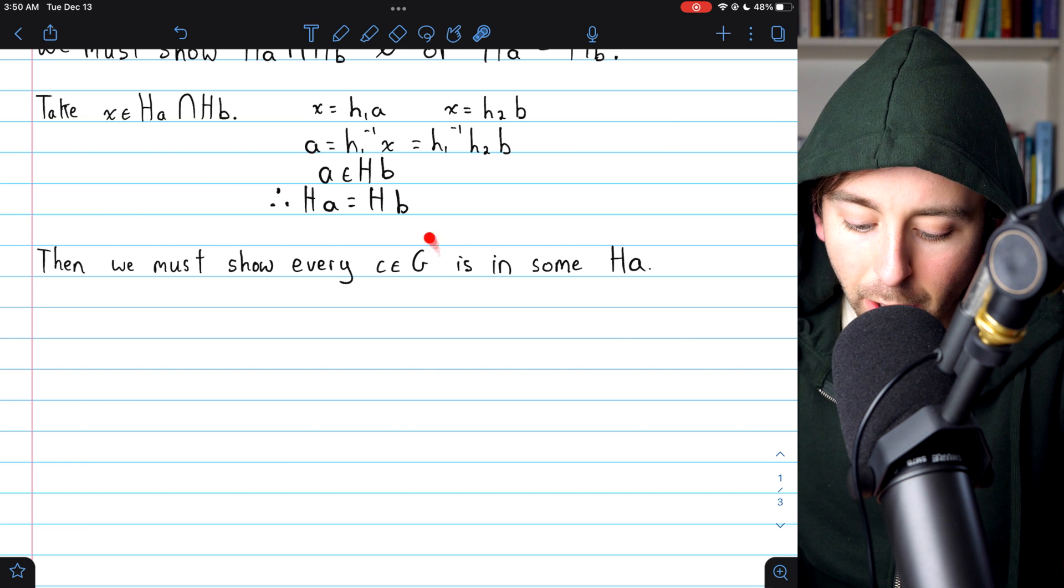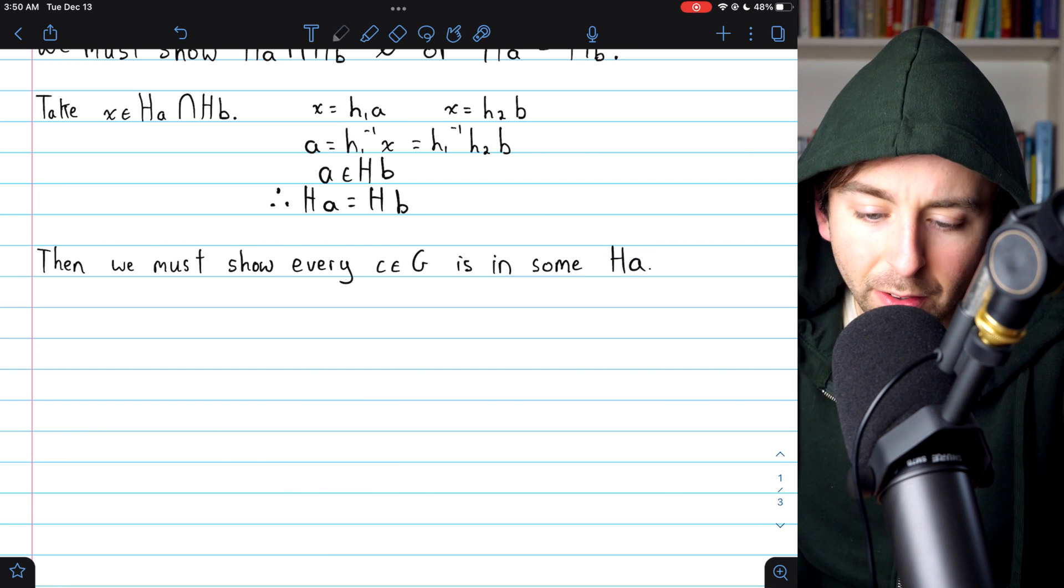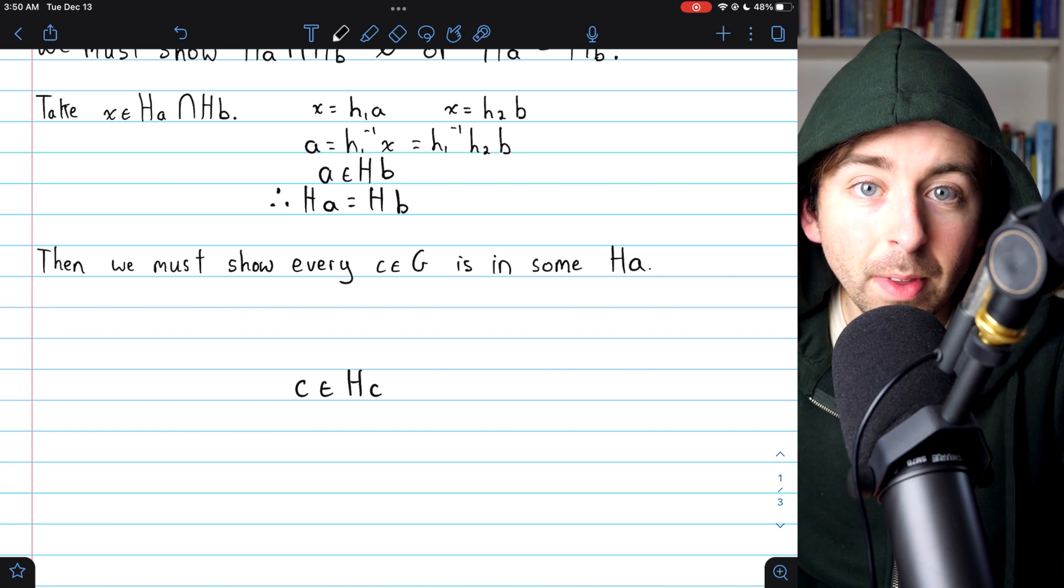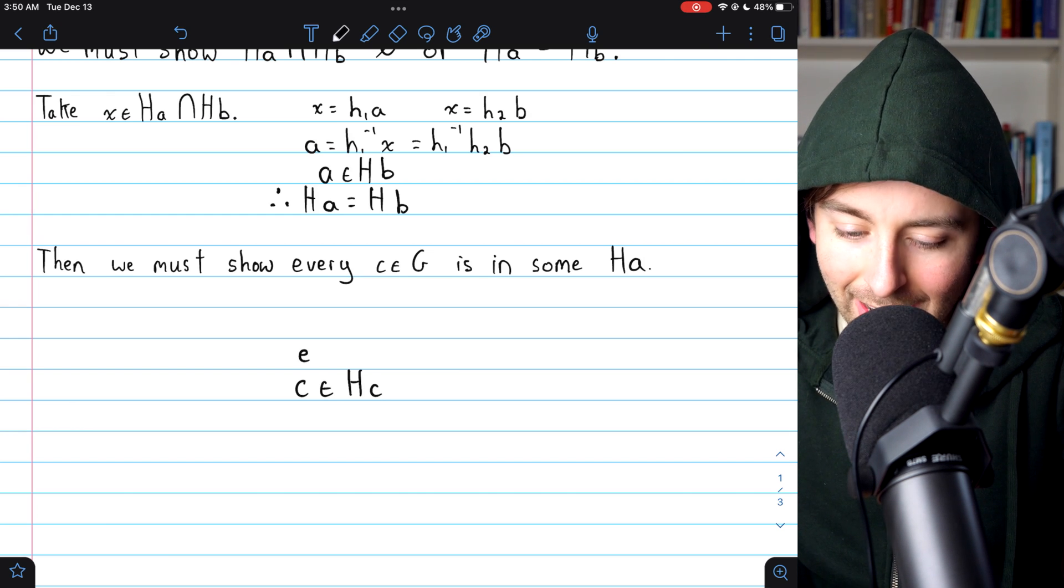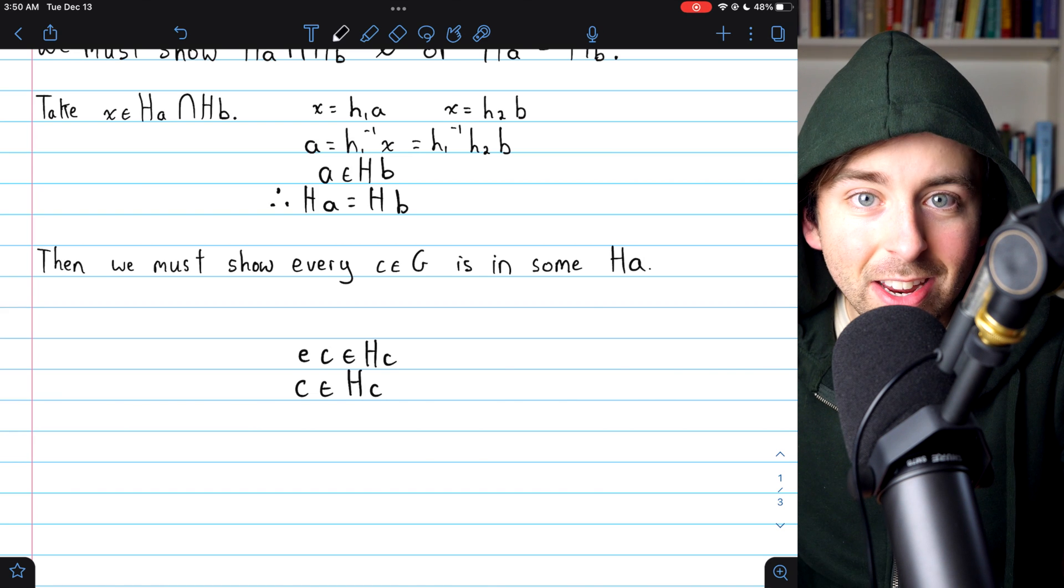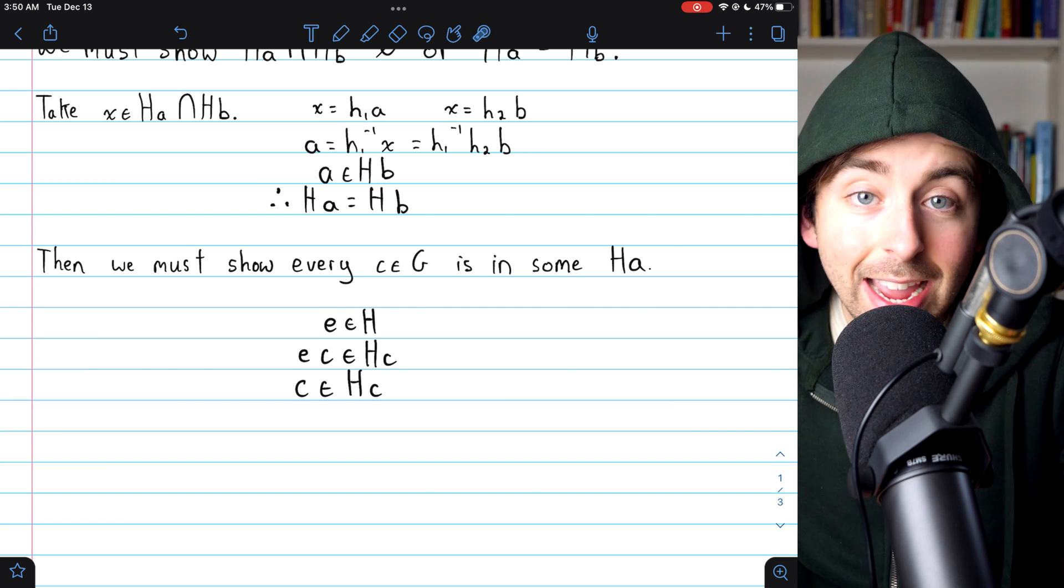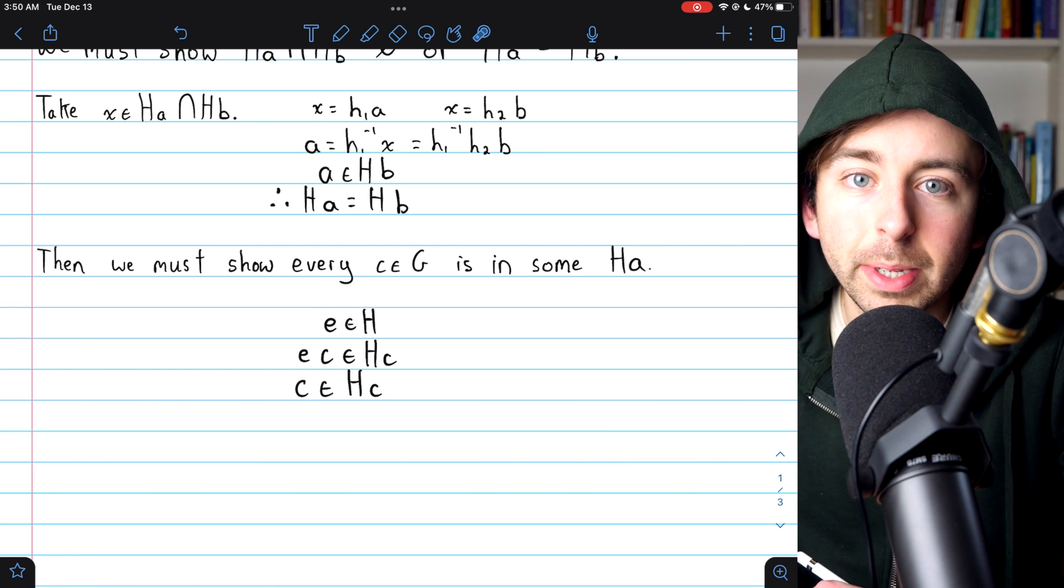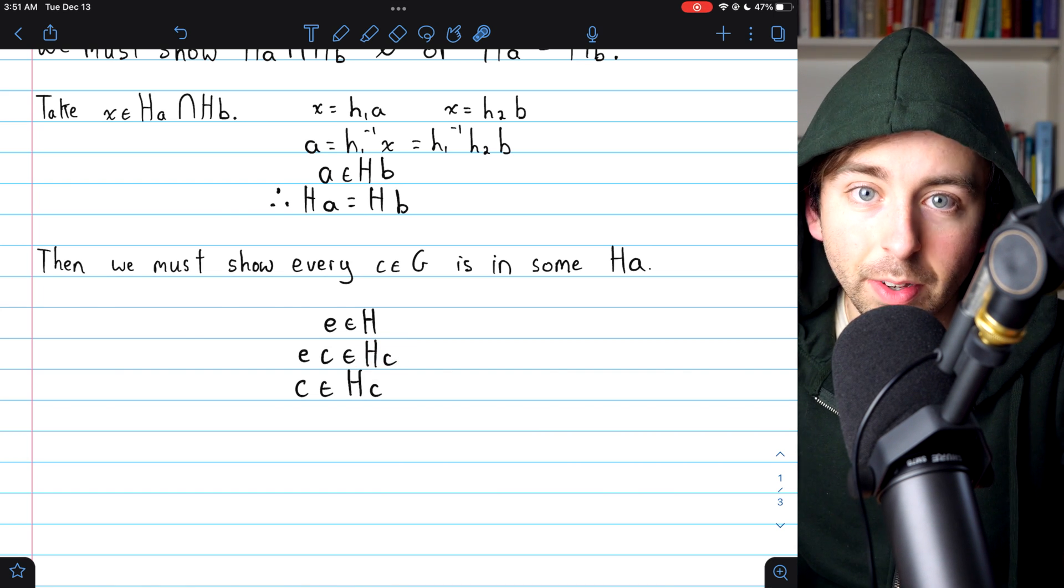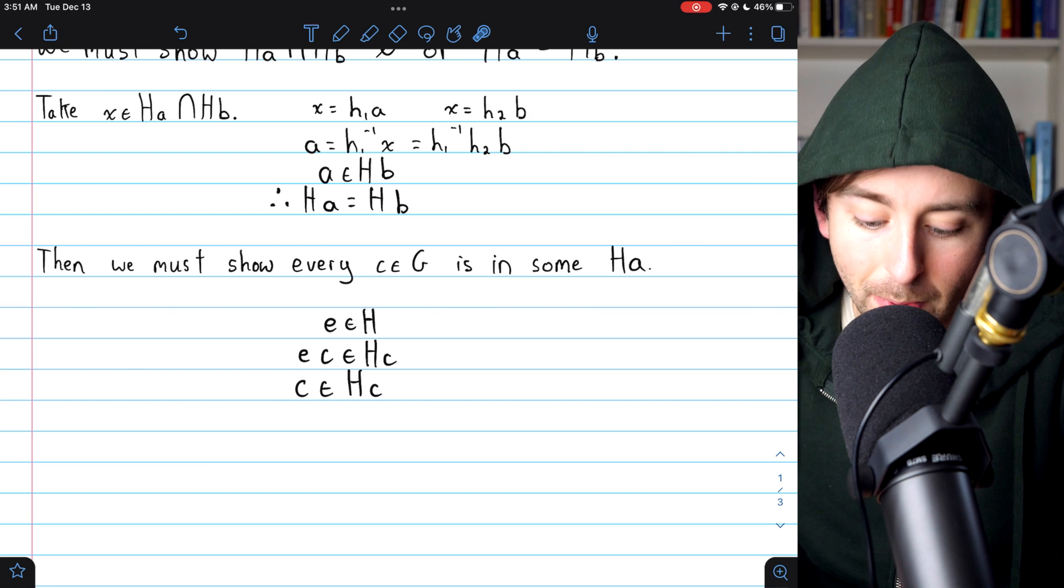All that remains is to show that every element, say C, of the group G is indeed in one of the cosets. And that's very straightforward. We'll claim that this element C of the group G is an element of the coset Hc. Now, why is this true? Well, because the identity E times C is an element of Hc by definition, because the identity element E has to be an element of H, because H is a subgroup. So it must contain the group's identity element E, but then E times C is an element of Hc, the coset by definition. And of course, EC by definition of identity is just the element C. So C must be an element of Hc.